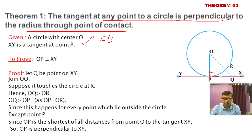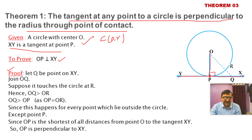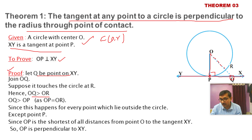Given: a circle with center O — you can write C(O, r) directly. XY is a tangent. To prove: OP ⊥ XY. Construction: let Q be any point on XY; join OQ. Then OQ is greater than OR because OR equals the radius OP. So OQ is greater than OR, hence OQ is greater than OP.